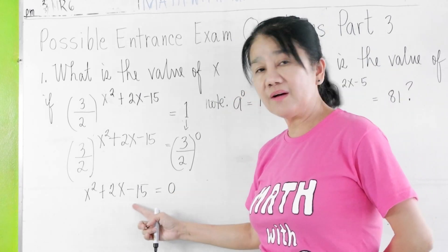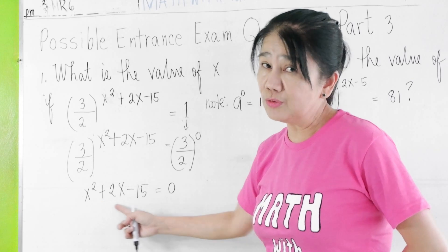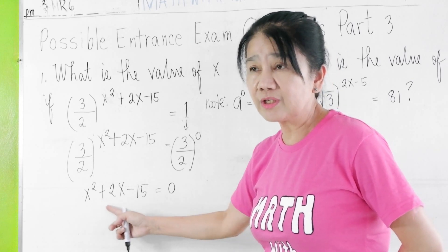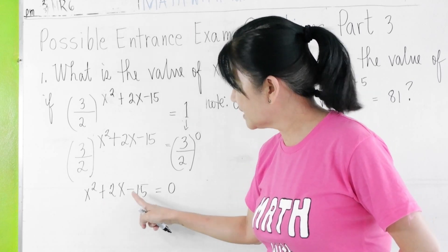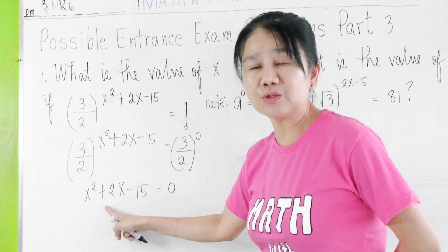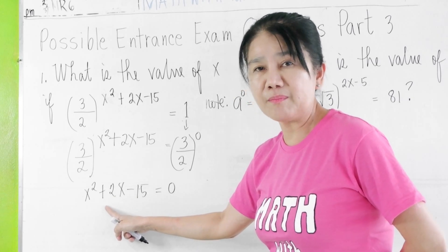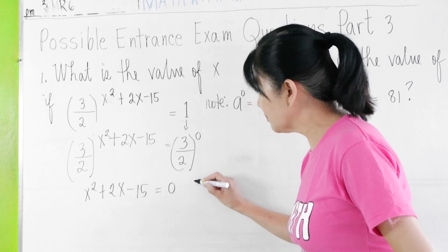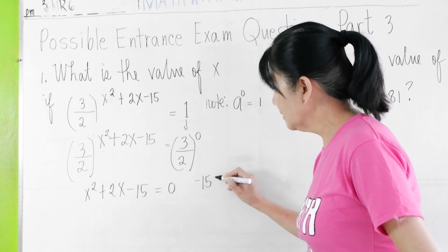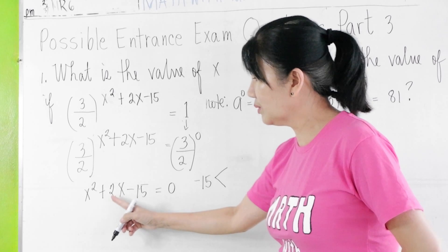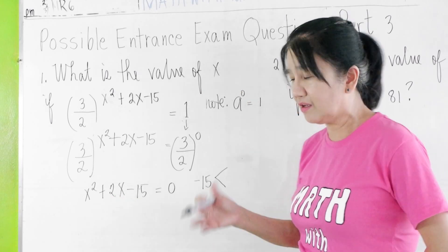We now have a quadratic equation here. So we can do factoring or quadratic formula. But since it is factorable, we might as well use the factoring method. So we find factors of negative 15, which when added will give us 2. We can do trial and error here.